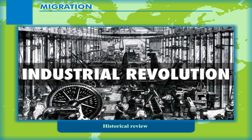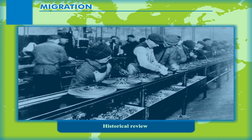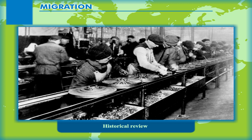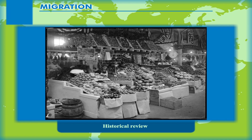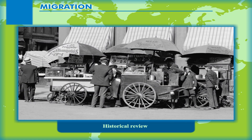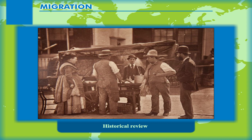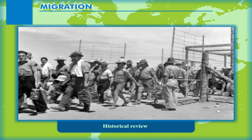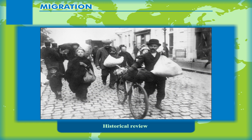Historical Review: The onset of the Industrial Revolution in Europe in the late 19th century removed many of the checks that had previously constrained urban populations. As food supplies increased and stabilized and industrialized centers moved into place, cities began to support larger populations, sparking the beginning of rural to urban migration on a massive scale. The United Kingdom went from having 20% of the population living in urban areas in 1800 to more than 70% by 1925.